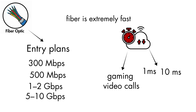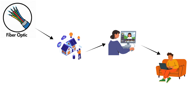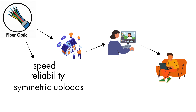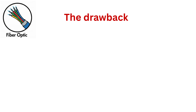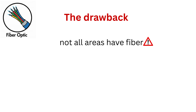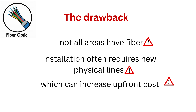This makes gaming, video calls, and cloud apps feel smooth and instant. Fiber is perfect for busy homes, creators, and remote workers who need stable performance. Its main strengths are speed, reliability, symmetrical uploads, and resistance to interference. The main drawback is availability — not all areas have fiber yet, and installation often requires new physical line, which can increase upfront costs.